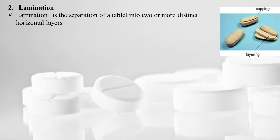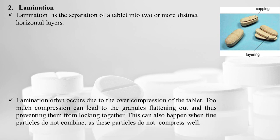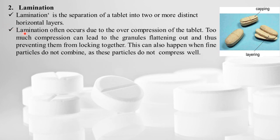Lamination is the separation of a tablet into two or more distinct horizontal layers. The difference between capping and lamination is that capping is removal of only the upper or lower part, while lamination is separation into two or more distinct horizontal layers. Lamination often occurs due to over-compression of the tablets.